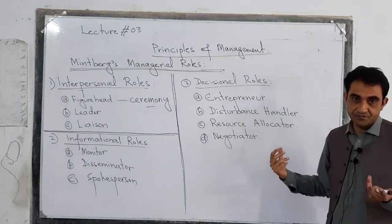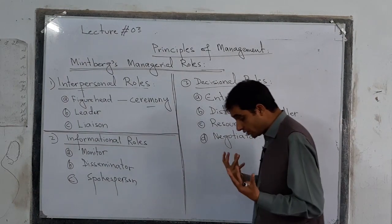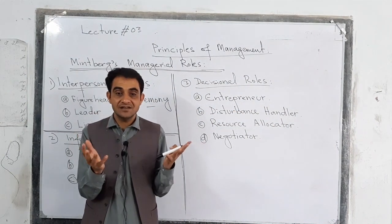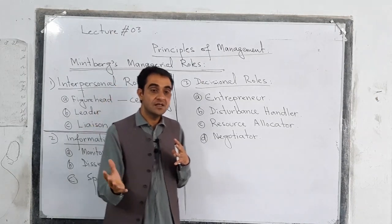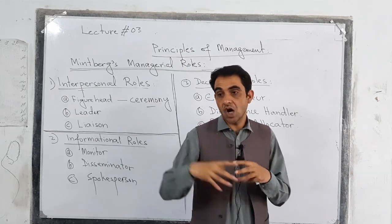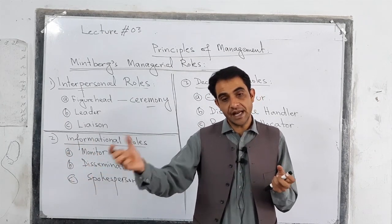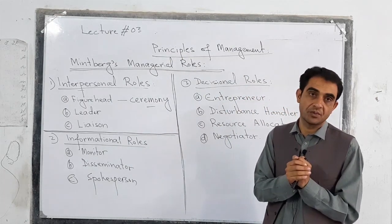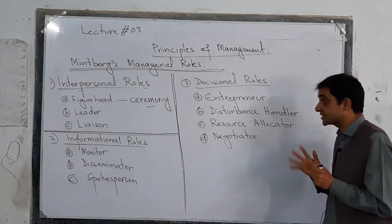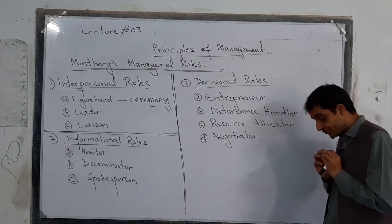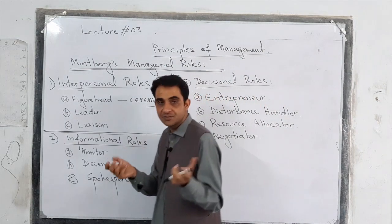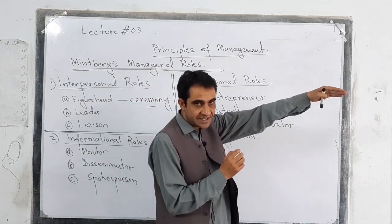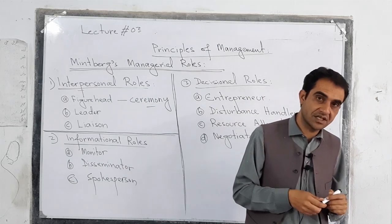B: disturbance handler role. Disturbance handler role means that when there is some tension, disturbance, dispute, or problem existing among employees or with some other organization, the managers are handling, controlling, and solving this problem. This is called disturbance handler role — they are troubleshooting different problems of the organization, whether the problem is inside the organization or with some other organization.